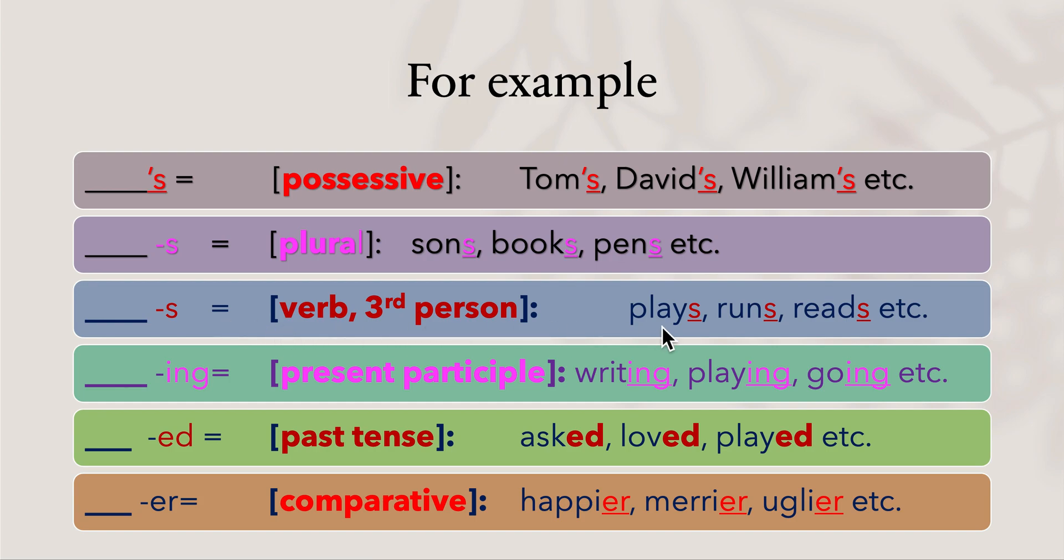Present participle '-ing': writing, playing, going. Past tense '-ed': asked, loved, played, etc. Comparative '-er': happier, merrier, uglier. So we can see that we have these inflectional morphemes.